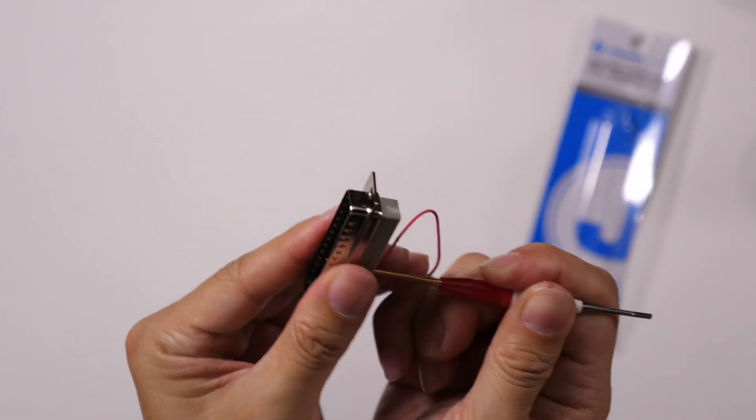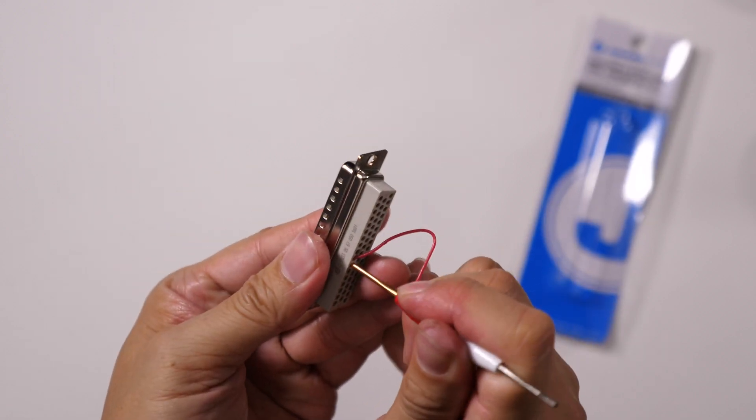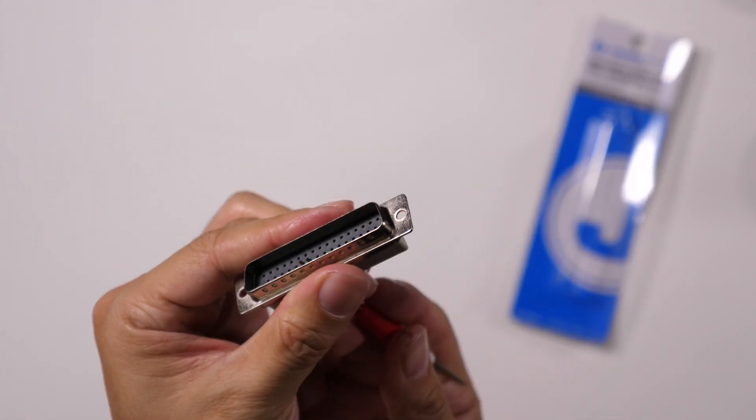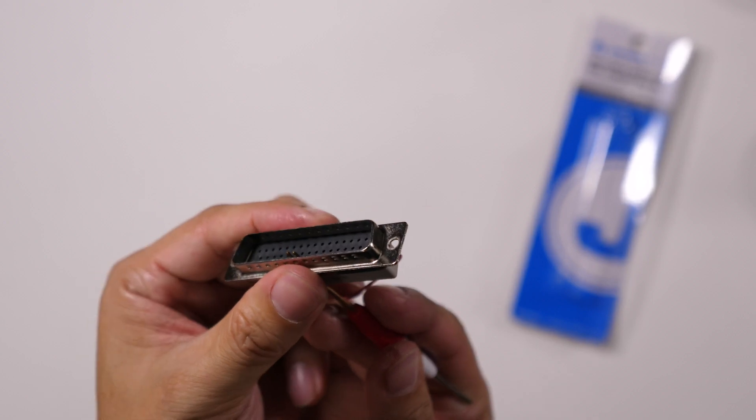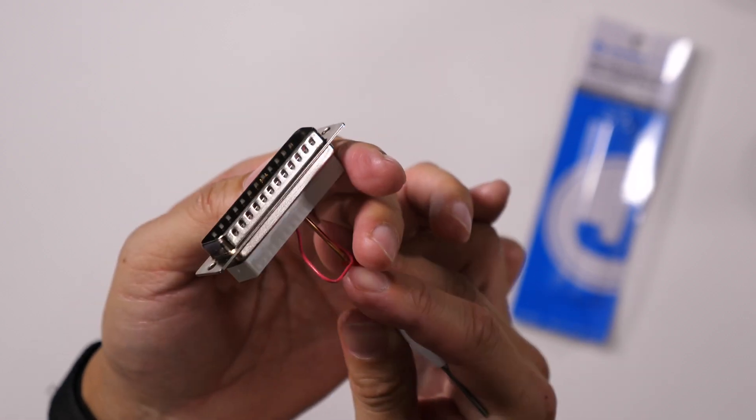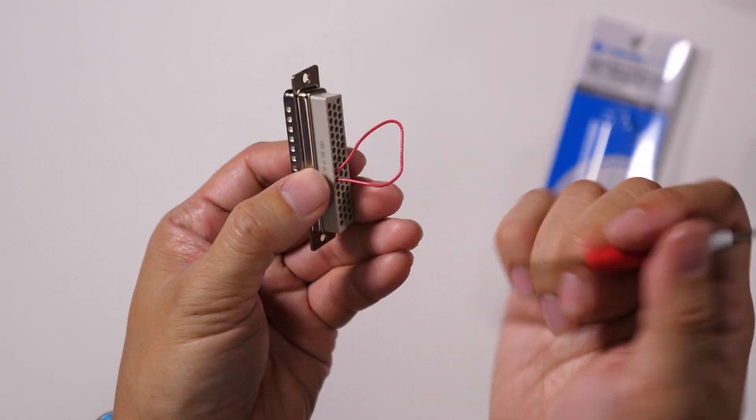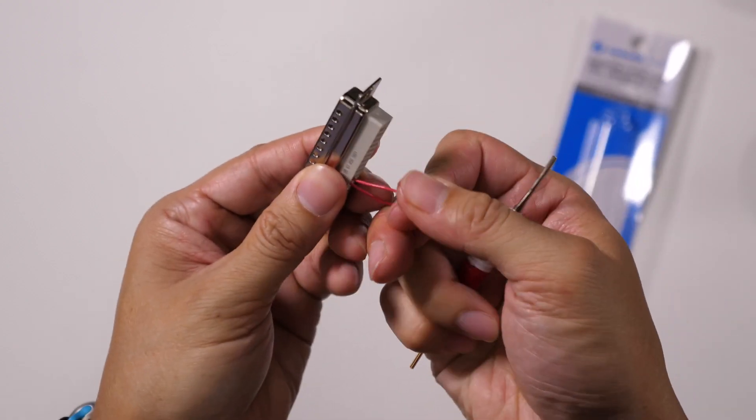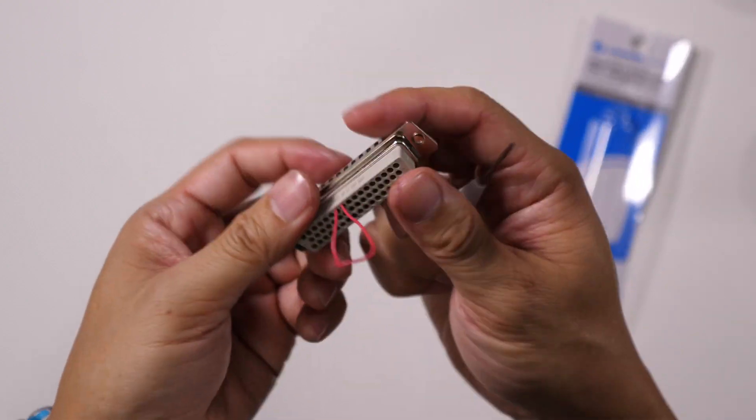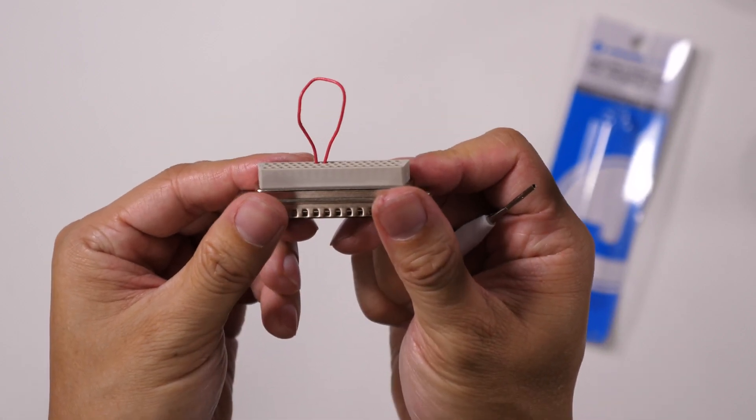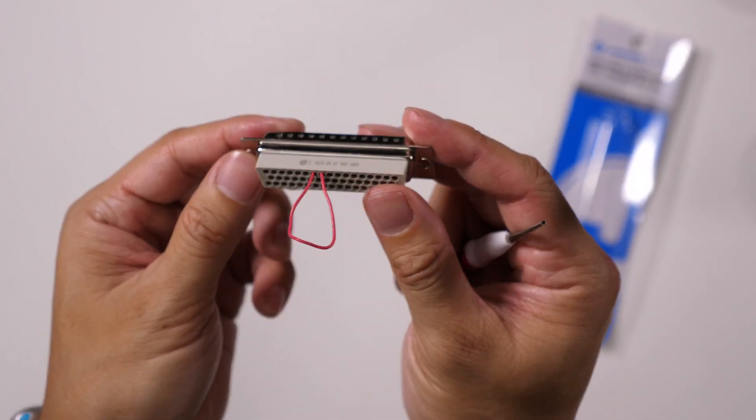You can hear it snap in there, and it needs to go a little further. There we go. So the pin is sticking out all the way there. Then you just pull the tool out. Then you've got that jumper wire inserted into those two pin holes.